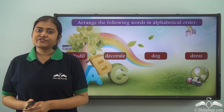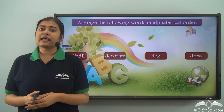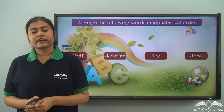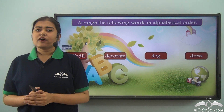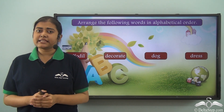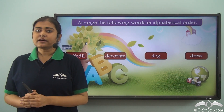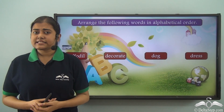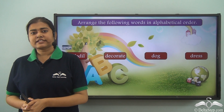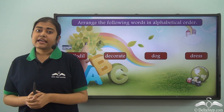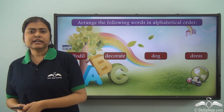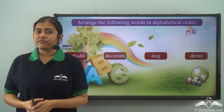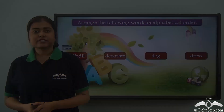Today we learned what alphabetical order is and how to arrange a given set of words in the correct order. Remember, we always have to make sure that the beginning letters of the words are in the correct order of the alphabet, starting from A till Z. When the first letters are the same, we move to the second letter; if they are also the same, we move to the third and so on. Take up more sets of words and see if you can arrange them in the correct alphabetical order, and searching words in a dictionary should no longer be a problem.